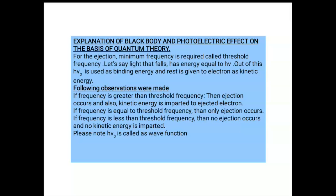The energy hν₀ is utilized for the knocking out of the electrons, and the rest of the energy hν − hν₀ is given to electrons as kinetic energy. So kinetic energy = hν − hν₀. Number one: if ν > ν₀, ejection takes place and the difference in energy is imparted to the electron as kinetic energy. Number two: if ν = ν₀, ejection takes place but kinetic energy is zero. Number three: if ν < ν₀, no ejection of electrons takes place and no kinetic energy is imparted. hν₀ is also called the work function.